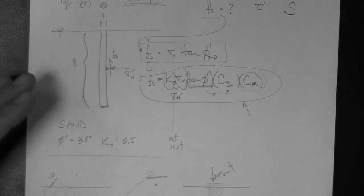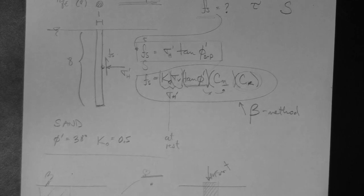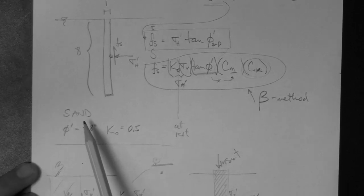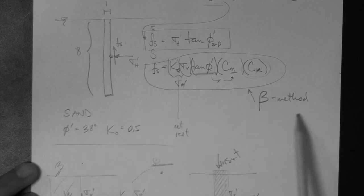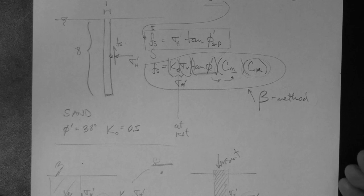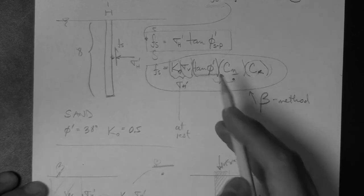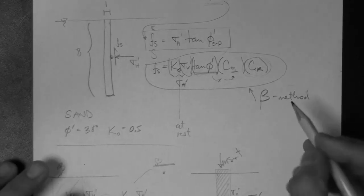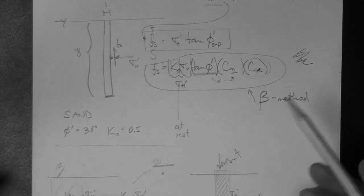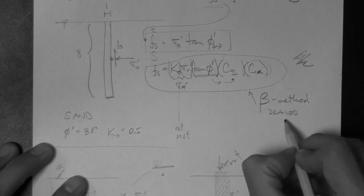The beta method is a drained method. This sand is the first indication — sand behaves drained in both short and long term. Additionally, the equation uses phi-prime and sigma-v-prime: drained parameters. There is no Su (undrained shear strength) in this equation, confirming it is a drained method.